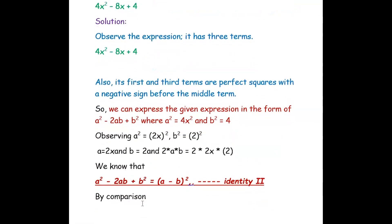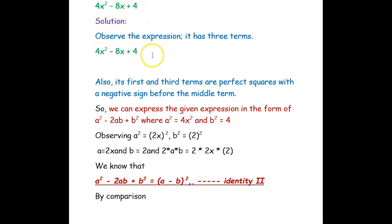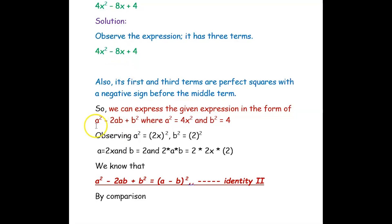Now let us see the next equation: 4x squared minus 8x plus 4. This expression also has three terms. We have to see the coefficient of the first term and the constant term: here it is 4 and here also it is 4. Since 4 is a perfect square number, and we have a negative sign in front of the middle term, we can express the given expression in the form of a squared minus 2ab plus b squared.